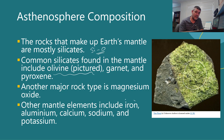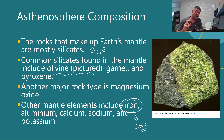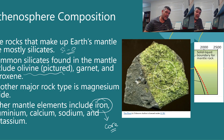Iron is a particularly important element — it is a key component of the core, which is why the core is magnetic. Being such a heavy atom, iron would have sunk down to the centre of the Earth as it was cooling and forming.